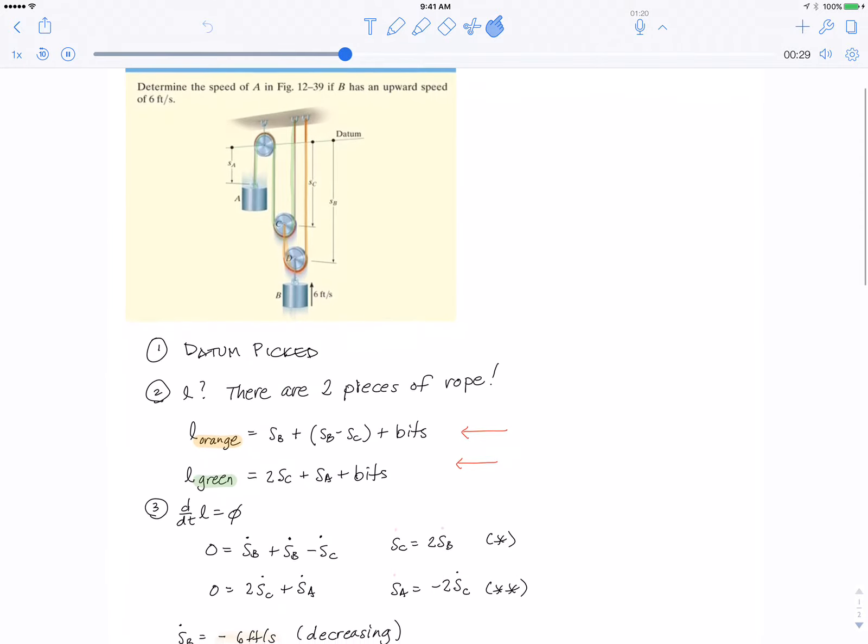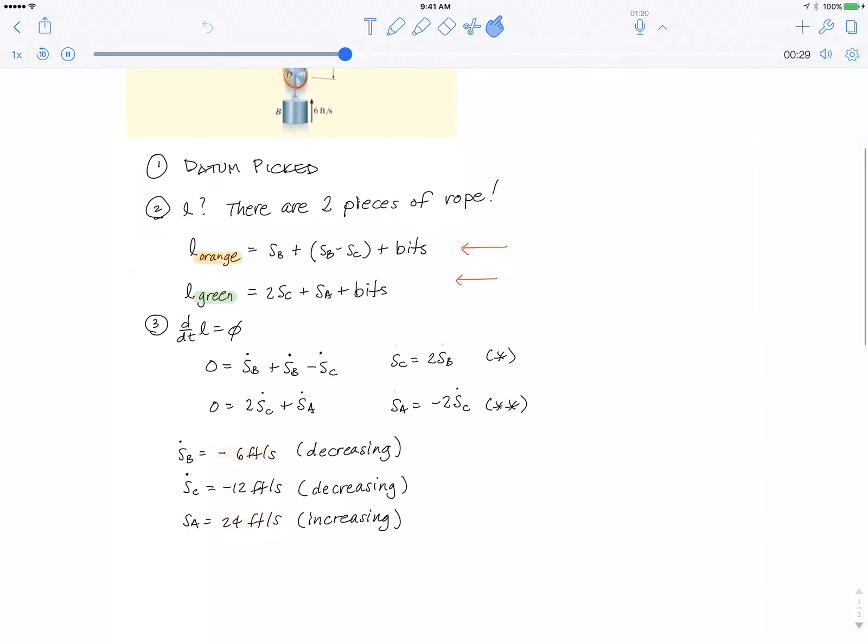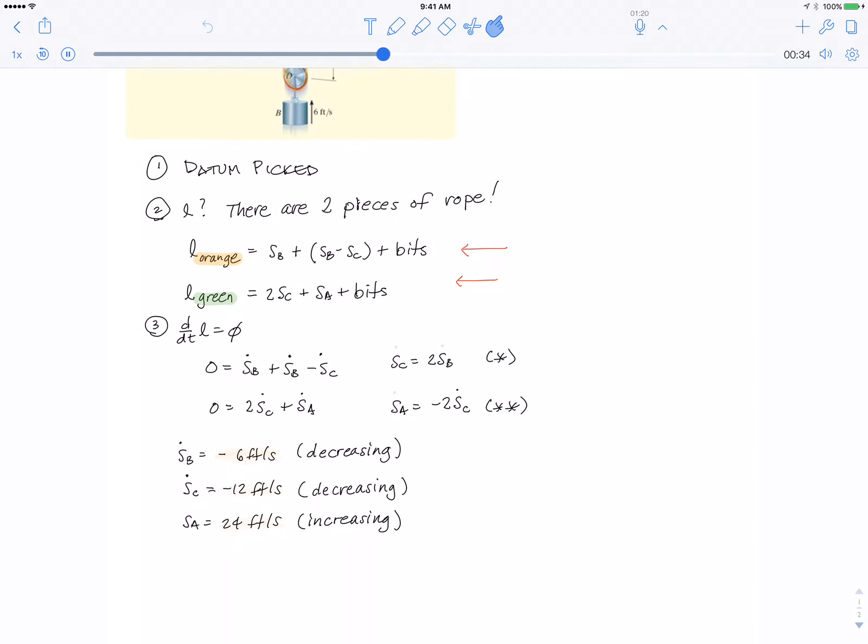You get the usual relationships between the velocities. Let's see, I'm missing some dots here. That should be SC dot is 2 SB dot. SA dot is minus 2 SC dot.